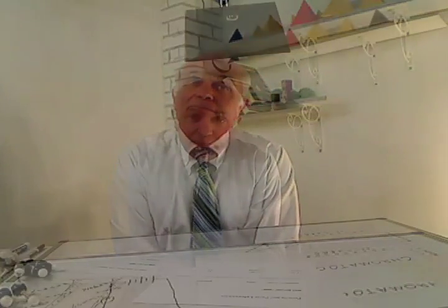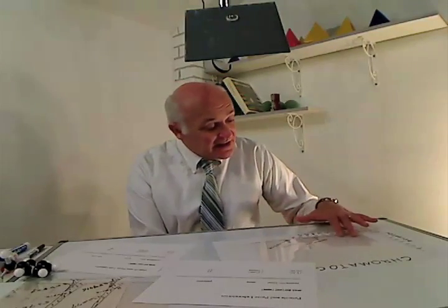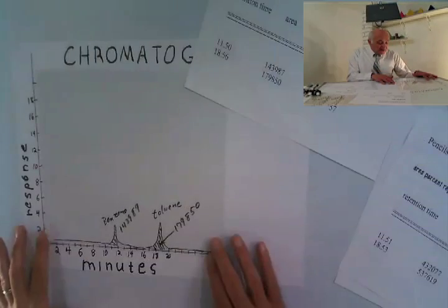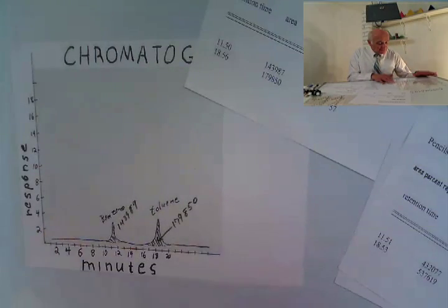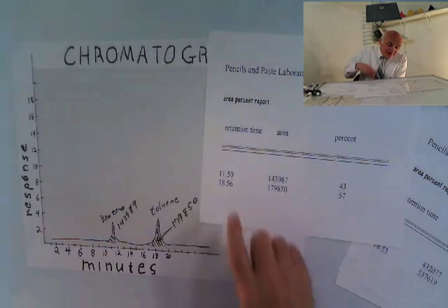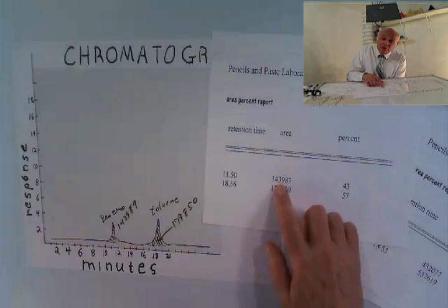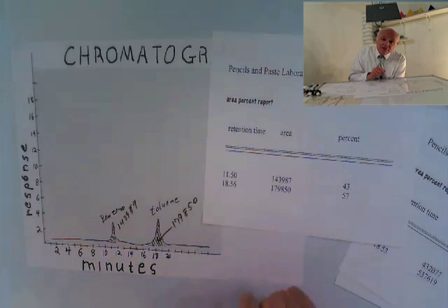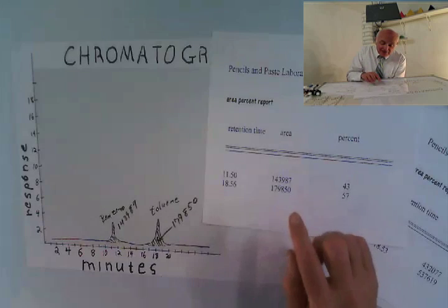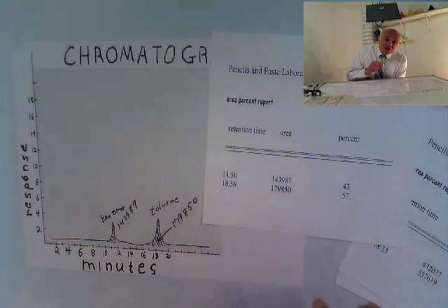We make up a standard of benzene and toluene at 50 parts per million and subject it to our chromatographic analysis. After about 19 minutes we get a chromatogram. The report tells us benzene came off at 11.5 minutes with an area of 143,000, and toluene came off at 18.56 minutes with a quantitation area of 179,000.